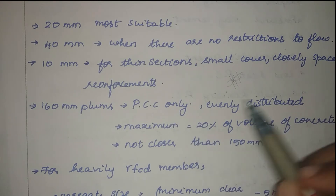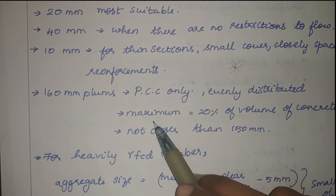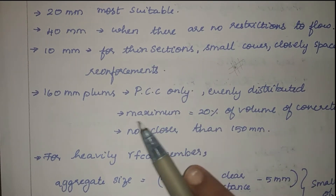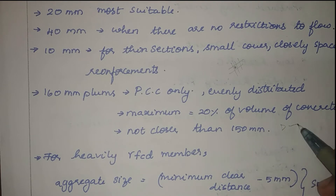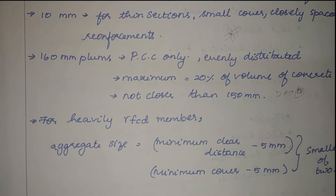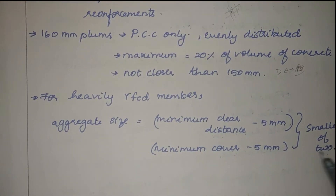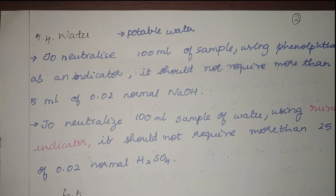When plums are used in PCC, they must be evenly distributed and not segregated or settled at the bottom. The maximum volume of plums should be less than 20% of the volume of concrete, and plums should not be closer than 150 mm to each other. For heavily reinforced members, the aggregate size should be the smaller of: minimum clear distance minus 5 mm, or minimum cover minus 5 mm.